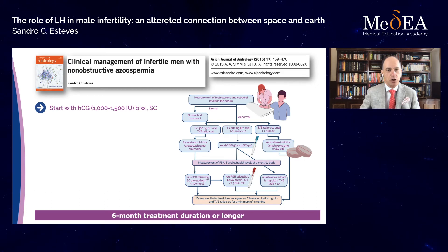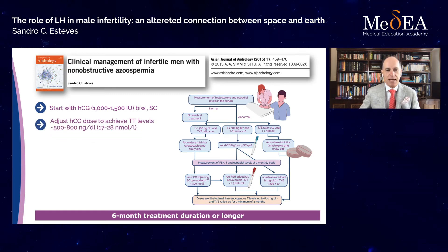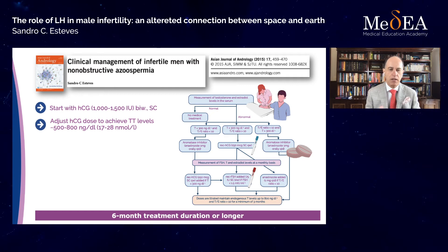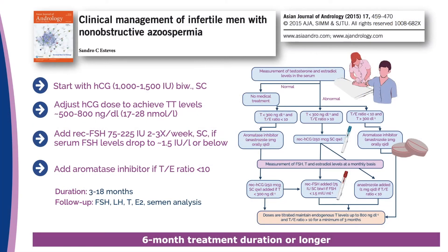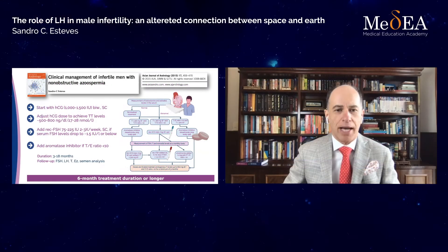We have also explored this approach and published an algorithm in the Asian Journal of Andrology describing what we use at our center. We start with HCG twice a week and adjust the dose to achieve total testosterone levels between 500 and 800 ng/dL (17 to 28 nmol/L). We add recombinant FSH two or three times a week when FSH levels drop to about 1.5 IU/L or below. We may add an aromatase inhibitor if the testosterone-to-estradiol ratio falls below 10, meaning aromatase activity is excessive.